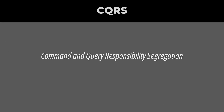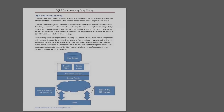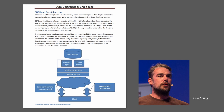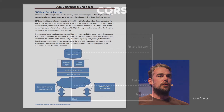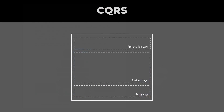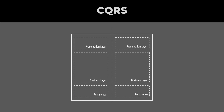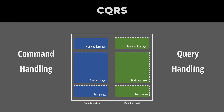CQRS stands for Command and Query Responsibility Segregation. The term was introduced by Greg Young in 2010 to describe a pattern that advocates for clear code separation between the state mutation and data retrieval. If we imagine a traditional layered architecture, CQRS slices our core application logic vertically, creating two models — one used for reads and the other one used for writes.